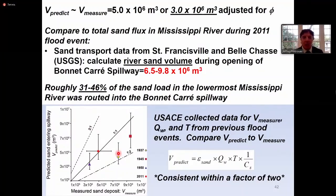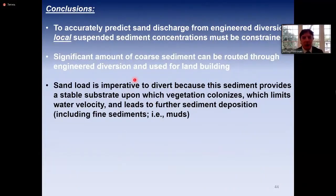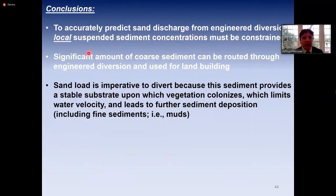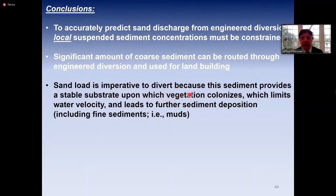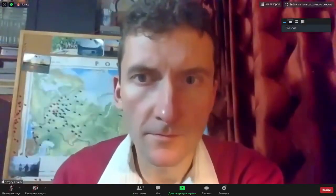To accurately predict sand discharge from engineered diversions of any river, we need to have control on the local suspended sediment concentration. There is a significant amount of coarse sediment that can be routed through engineering diversions and used for land building. Sand load is imperative to divert because it is this sediment that provides a stable substrate upon which vegetation colonizes, which then limits water velocity and leads to further deposition of sediment including fine muds. Thank you for your attention.